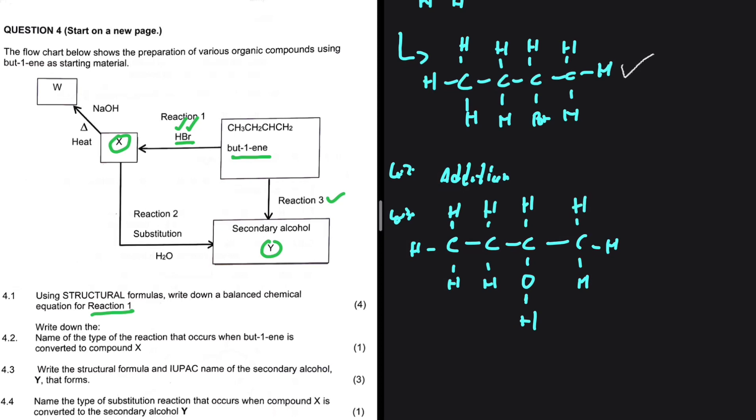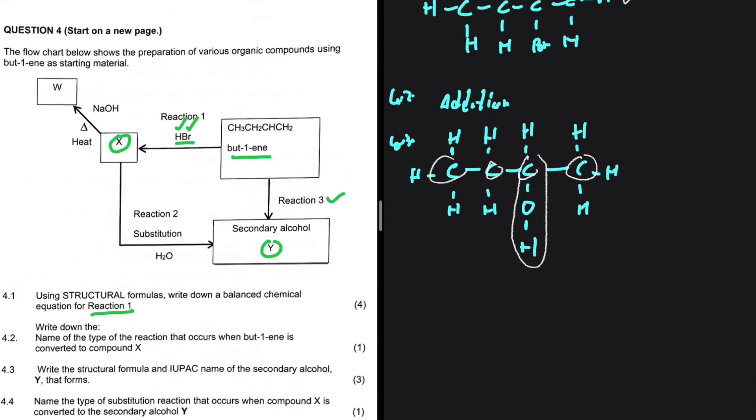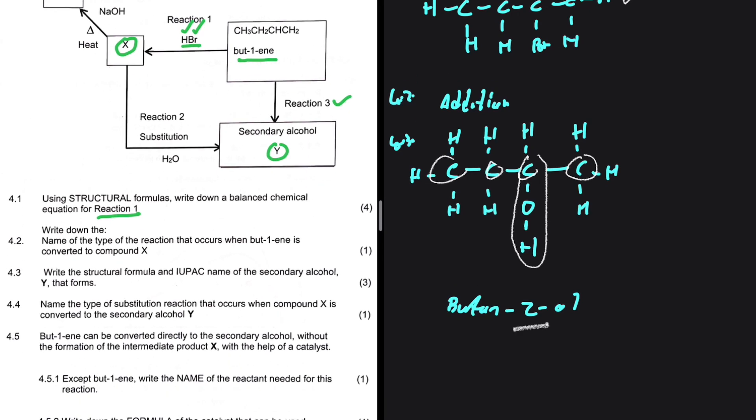Again, our product is a secondary alcohol because of Markovnikov's law. So let's name this alcohol. How many carbons? 1, 2, 3, 4. Which side are we numbering from? The right, because our OH is going to be on the second carbon. But if we start numbering from the left, it is going to be on the third carbon. It means that our IUPAC name will be butan-2-ol. The functional group is on the second carbon. That is 4.3.